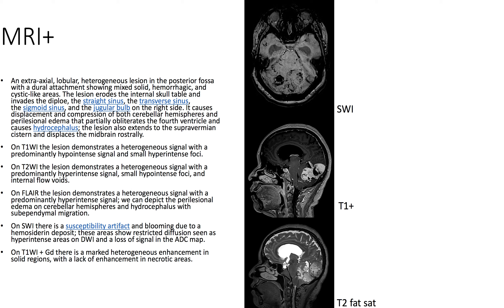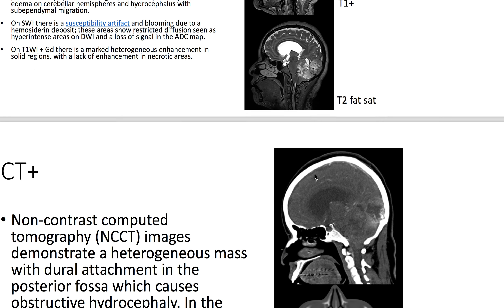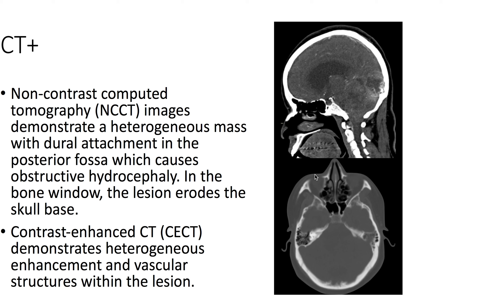On MRI, we see an extra-axial lobular heterogeneous lesion within the posterior fossa. It has a dural attachment and has mixed solid, hemorrhagic, and cystic-like areas. On T1-weighted imaging with contrast, we see marked heterogeneous enhancement in the solid regions and a lack of enhancement in the necrotic areas.